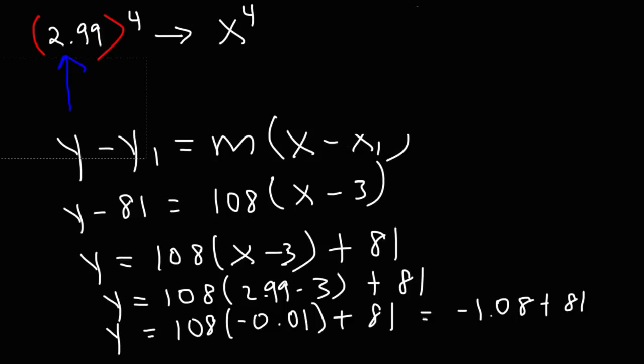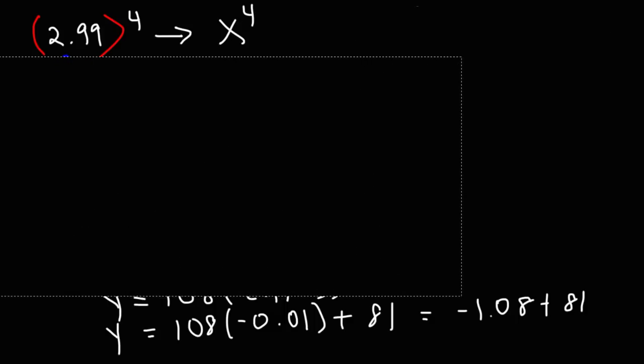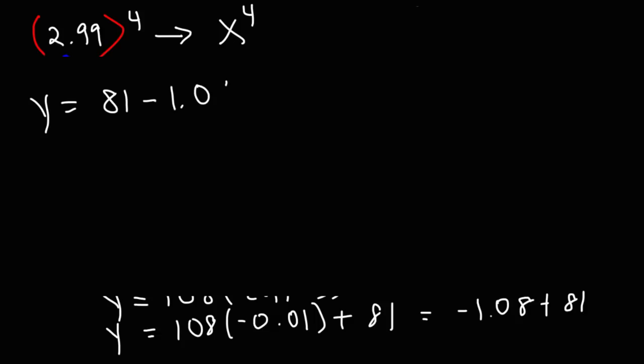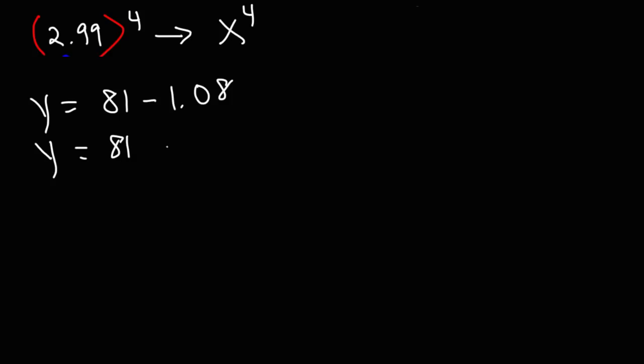Let me clear away a few things. So right now this is, I'm going to reverse it. It's 81 minus 1.08. Now let's break down 1.08 into two numbers. That's 1 and 0.08. 81 minus 1 is 80. Now 80 minus 0.08. What do you think that's going to be?